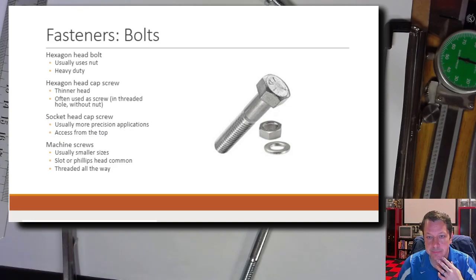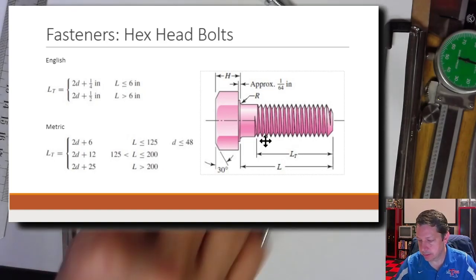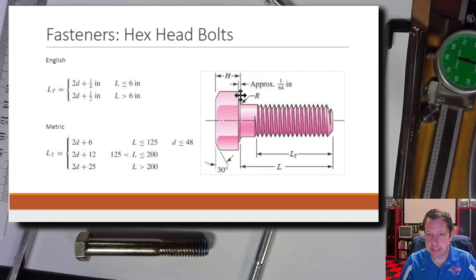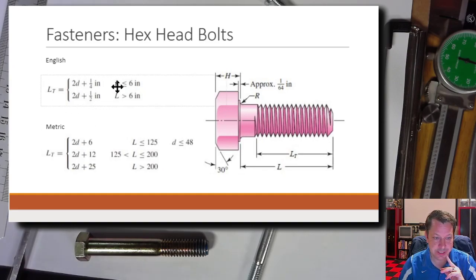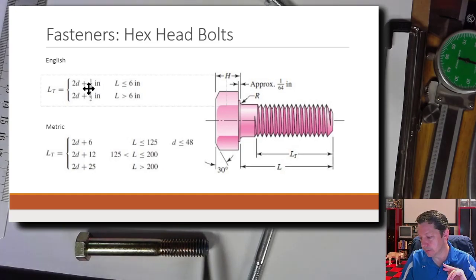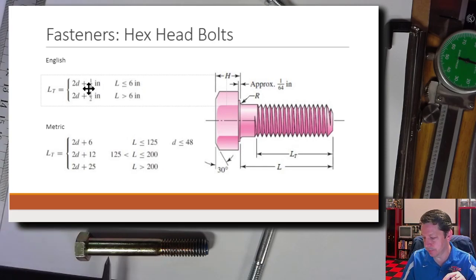Socket head cap screws and machine screws are threaded all the way through versus having a shank and threads. These equations tell you the ratio between threaded and unthreaded portions of a bolt — there's an English set for bolts less than or greater than six inches long, and a metric equivalent. These are useful because we need to know how much of the bolt is threaded vs. unthreaded.